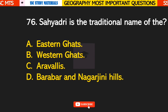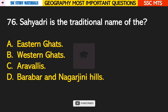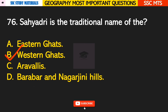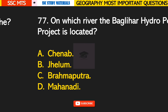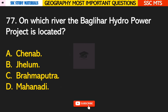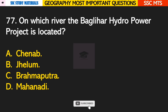Question number 76: Sahyadri is the traditional name of the? Answer B — Western Ghats. Question number 77: on which river is the Baglihar Hydro Power Project located? Answer A — it is located on the river Chenab.